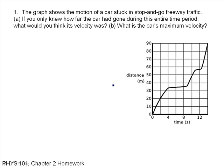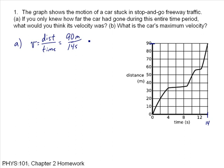And what is the car's maximum velocity? If you only knew how far it would go, then you would think it had traveled the same velocity the entire time. For part A, that speed is just distance over time. The car travels a distance of 90 meters in a time of 14 seconds, so 90 meters over 14 seconds is 6.4 meters per second.